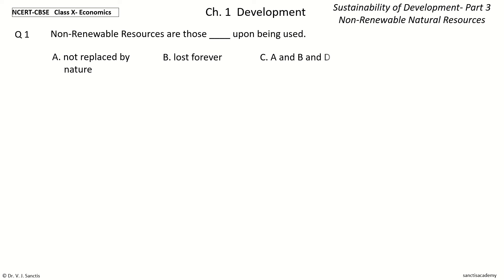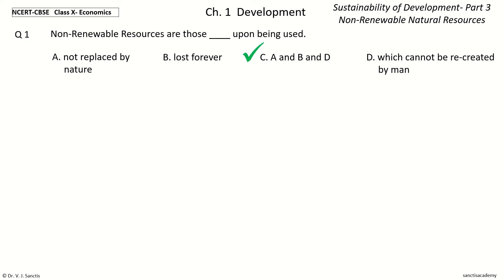Question one: Non-renewable resources are those — upon being used — the options are: not replaced by nature; lost forever; A and B; and which cannot be recreated by man. The answer is A, B, and D: non-renewable resources are those not replaced by nature, lost forever, and which cannot be recreated by man.